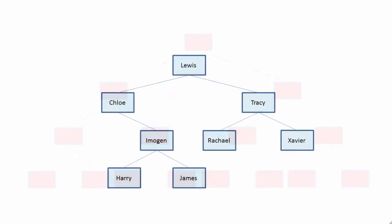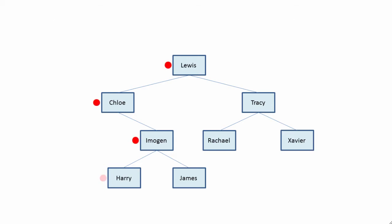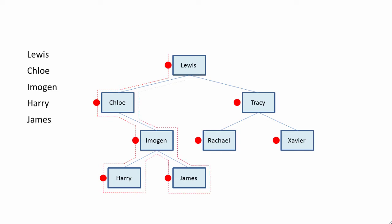Let's consider pre-order traversal with a tree containing some data. This tree was built using the data shown above, presented in order starting with Lewis. An easy way to see how it comes out is to put a dot to the left of each node and then follow the path indicated by these dots. First we encounter Lewis, then Chloe, then Imogen, then Harry, then James. Continuing the path, we get Tracy, Rachel, and finally Xavier.